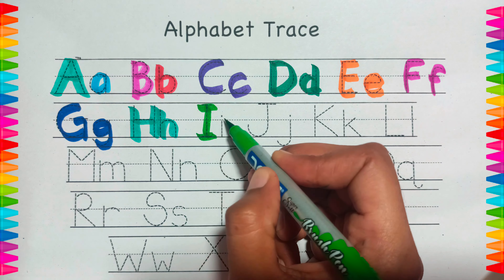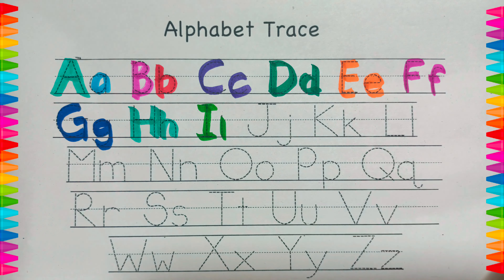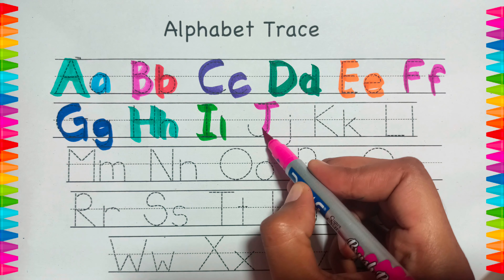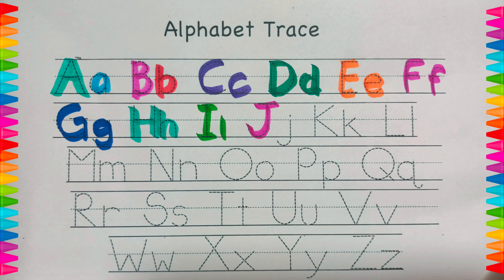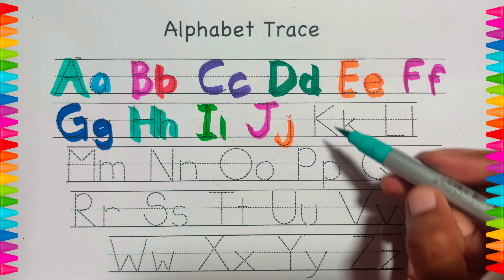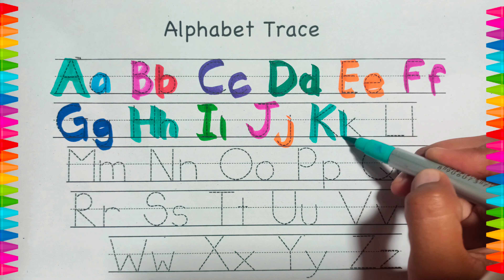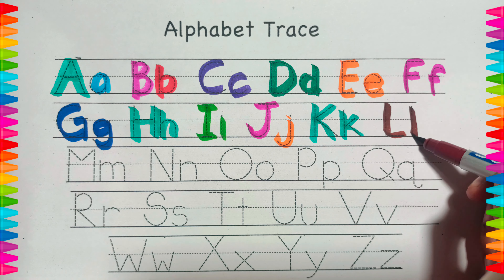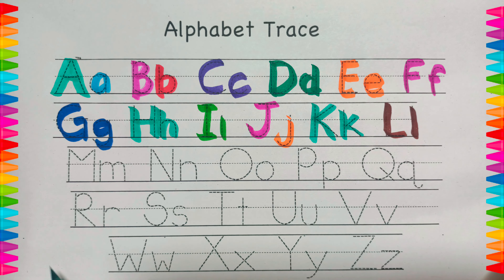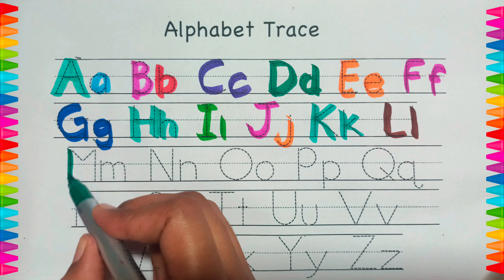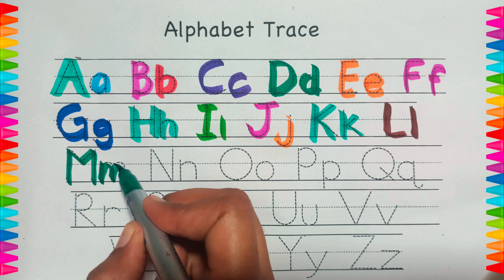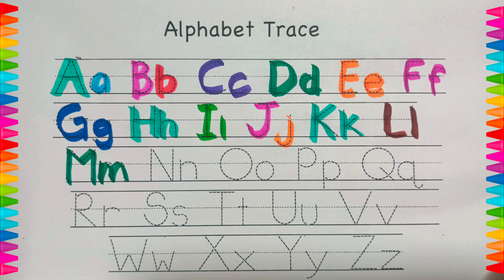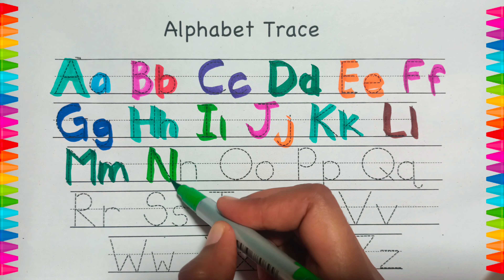I for... I for import. J for jug. K for kite. L for lion. M for monkey. N for nest.